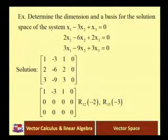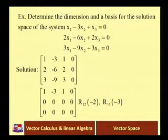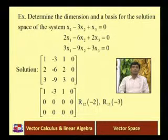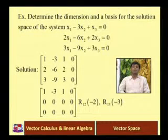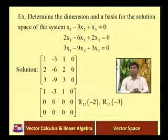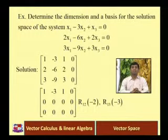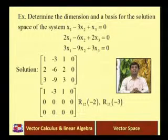Here is a complete example. Let us take one more example. Determine the dimension and a basis for the solution space of the system: x1 minus 3x2 plus x3 is equal to 0; 2x1 minus 6x2 plus 2x3 is equal to 0; 3x1 minus 9x2 plus 3x3 is equal to 0. Take the augmented matrix: first row is 1, minus 3, 1, 0; second row is 2, minus 6, 2, 0; third row is 3, minus 9, 3, 0. We multiply the first row by minus 2 and add to the second row, and multiply the first row by minus 3 and add to the third row.